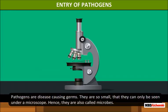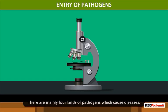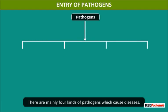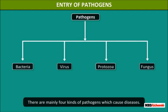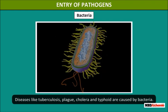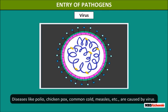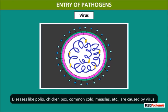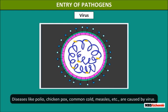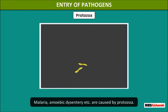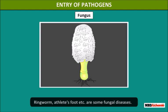Pathogens are disease-causing germs. They are so small that they can only be seen under a microscope, hence they are also called microbes. There are mainly four kinds of pathogens: Bacteria - diseases like tuberculosis, plague, cholera, and typhoid. Virus - diseases like polio, chickenpox, common cold, and measles. Protozoa - malaria and amoebic dysentery. Fungus - ringworm and athlete's foot are some fungal diseases.